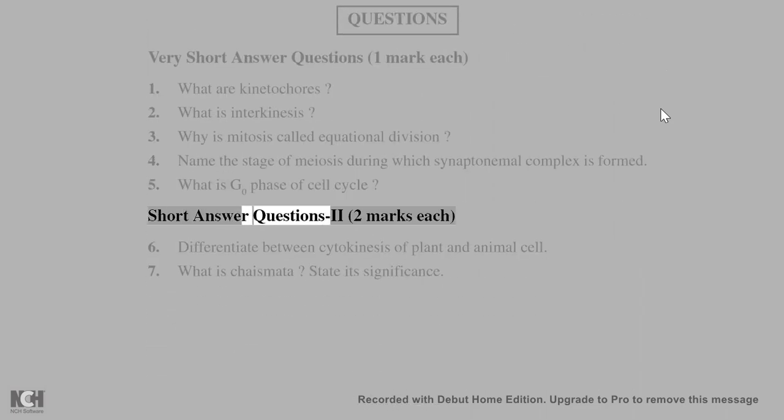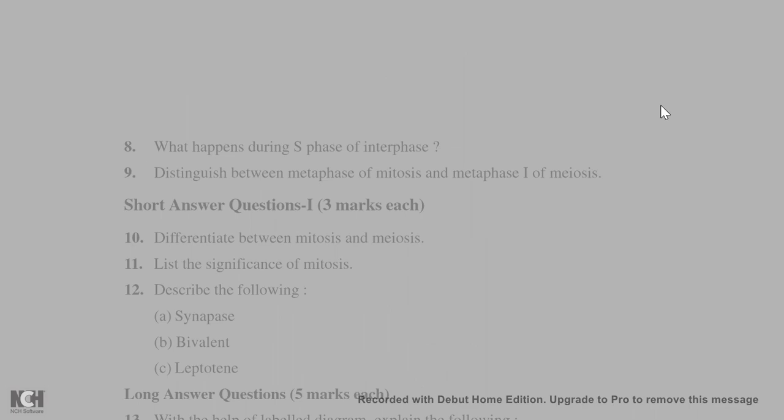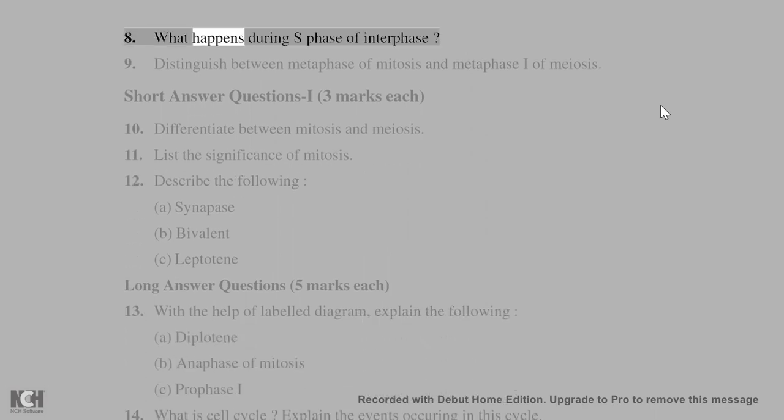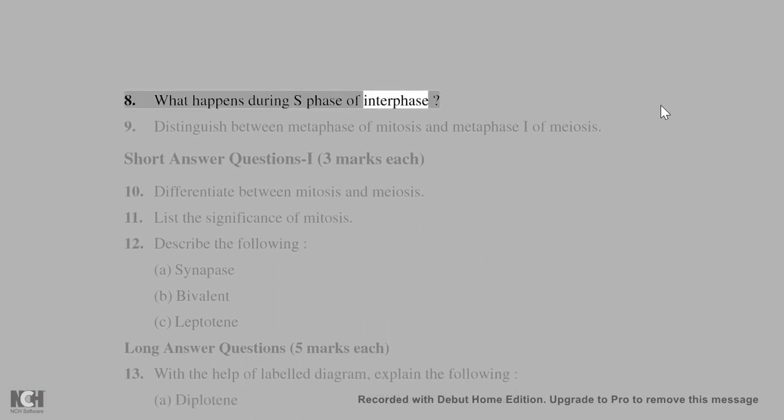Short answer questions (2 marks each): (6) Differentiate between cytokinesis of plant and animal cell. (7) What is chiasmata? State its significance. (8) What happens during S phase of interphase? (9) Distinguish between metaphase of mitosis and metaphase I of meiosis.